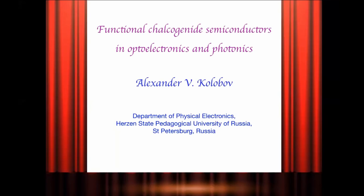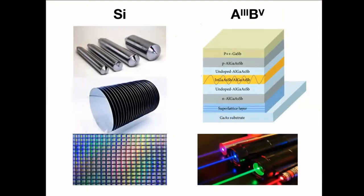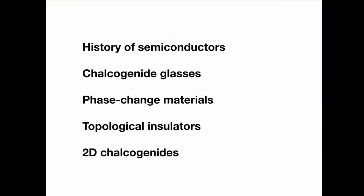When we speak about semiconductors these days, people usually mean either silicon or III-V semiconductors. Chalcogenides are materials that contain chalcogen, which is a group 6 element such as sulfur, selenium, or tellurium. I will speak about four classes of chalcogenide materials: chalcogenide glasses, phase change materials, topological insulators, and 2D chalcogenides.